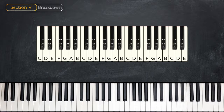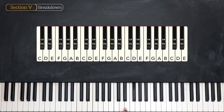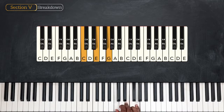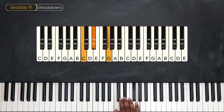From each note in a scale, we can build a chord based upon it. So we're going to have a C chord, a D chord, an E chord, and so on and so forth. What we need to know is whether the chord is major, minor, or diminished. As we learned in the previous part, we can recreate all types of chords from the major chord. So if the major chord doesn't fit in the scale, we're going to change it to a minor chord or a diminished chord.